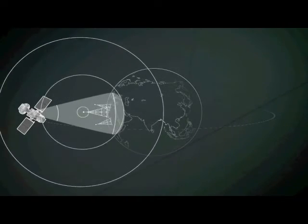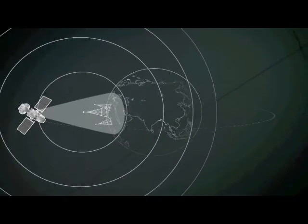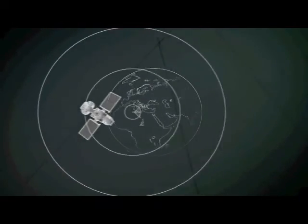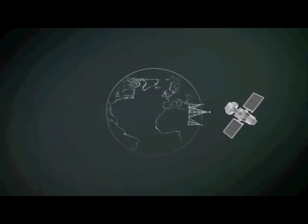The geostationary orbit is sometimes known as the Clark Belt after the British writer Arthur C. Clark. In 1945, he proposed using the orbit for global communications, building on the ideas of earlier scientists.